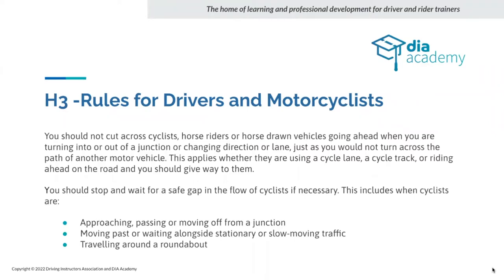H3: drivers and motorcyclists must not cut across cyclists, horse riders or horse-drawn vehicles when turning into or out of a junction, or changing direction or lane — just as you would not turn across the path of another motor vehicle. This isn't actually new — it's exactly what we did before, so don't worry too much. This applies whether using a cycle lane, cycle track, or riding ahead on the road — you should give way to them.